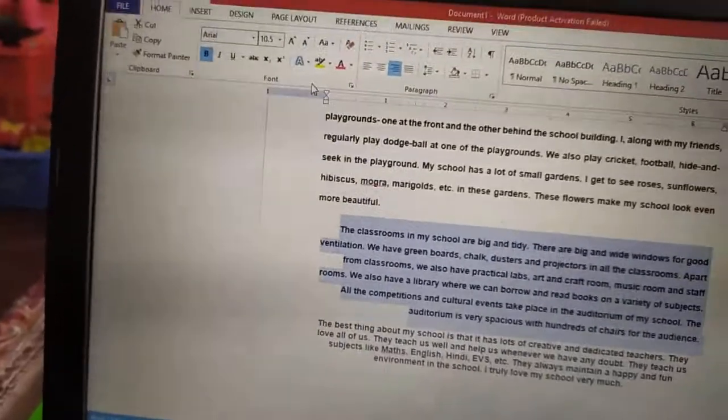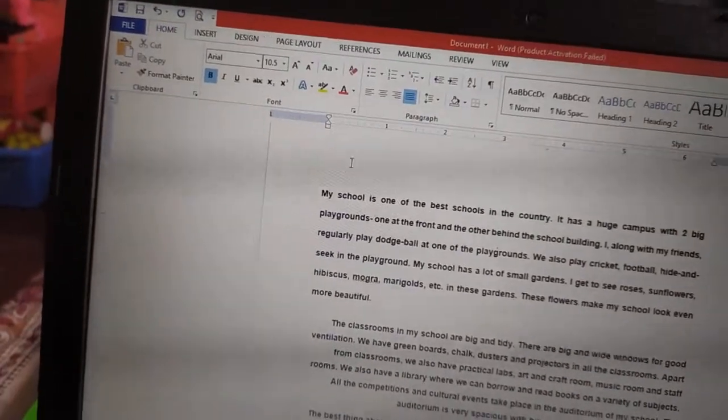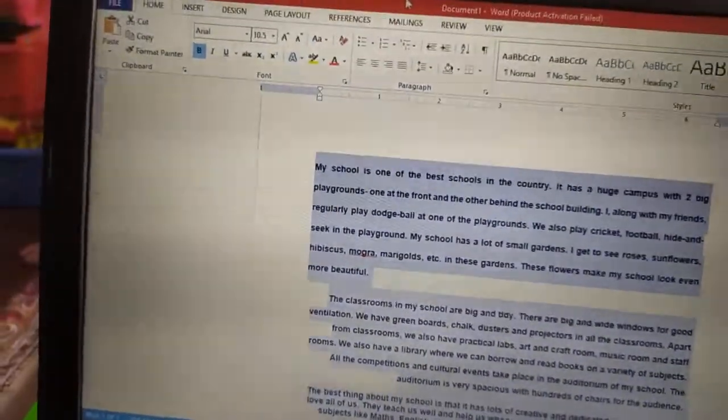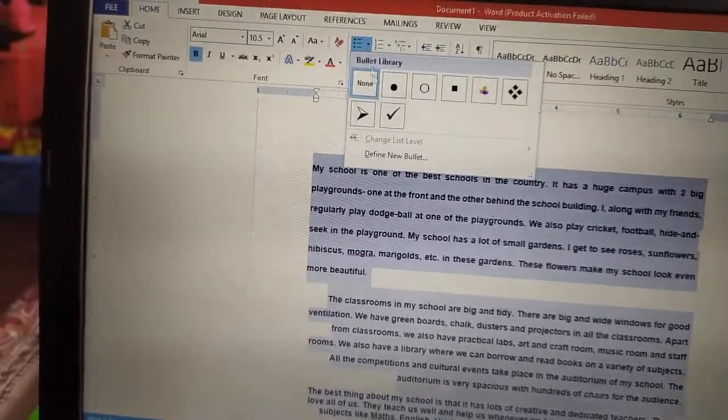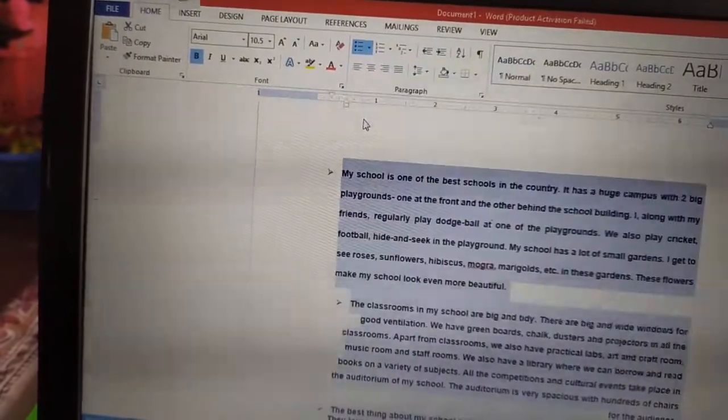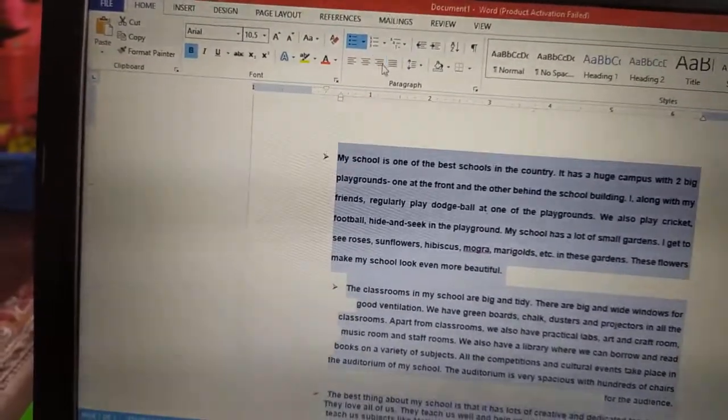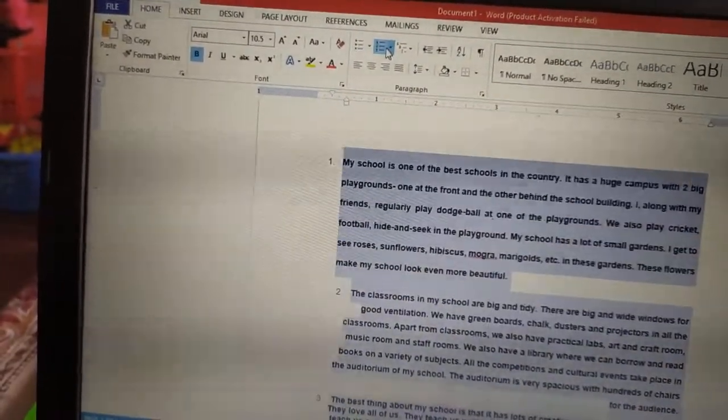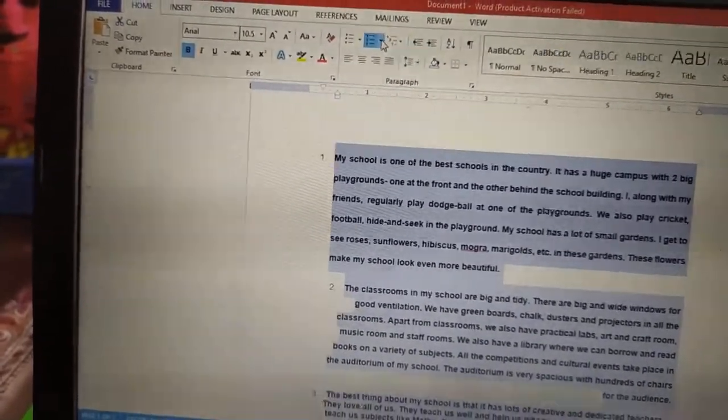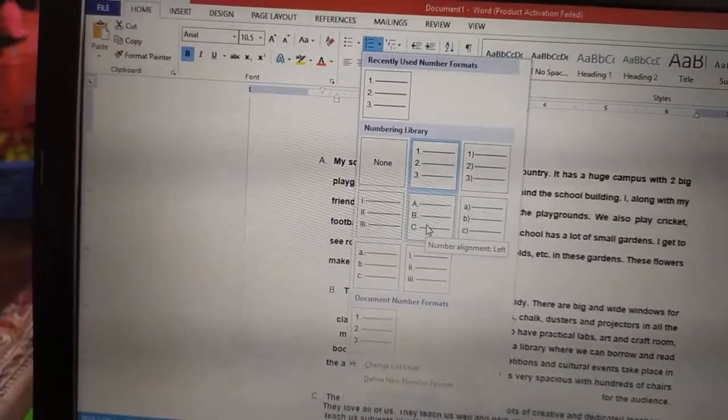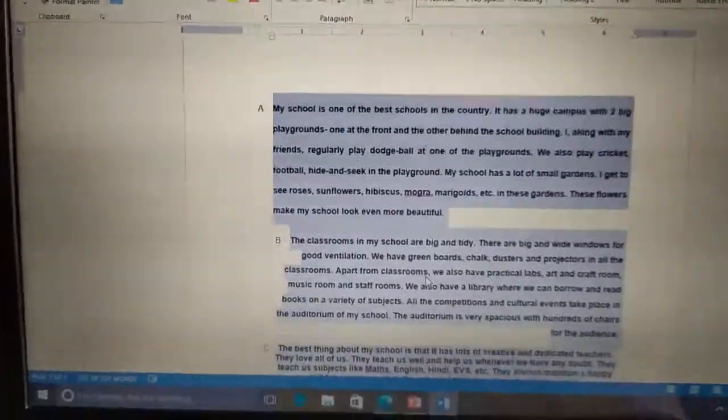And next, how to apply bullets and numbers. This is the bullet command. See, three paragraphs are there and three bullets are given. Now, if we want to apply numbers, see, it will show us the numbers. Suppose, if we want to apply A, B, C. See, the numbering is done.